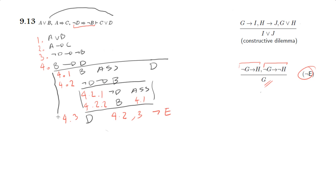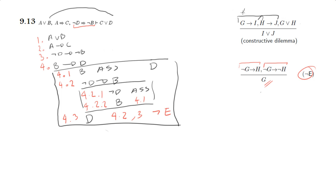So I'm done with that and I've proved B implies D. Now we've got A implies C and B implies D.